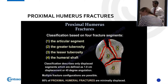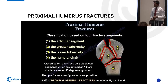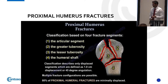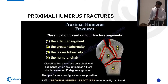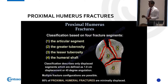You've got the articular segment — the ball bit facing the socket — the greater tuberosity where the supraspinatus tendon attaches, the lesser tuberosity where the infraspinatus and teres minor attach as external rotators, and the humeral shaft where latissimus dorsi and pec major attach. The more parts the humerus fractures into, the more severe the injury, including potential loss of blood supply to the humeral head.